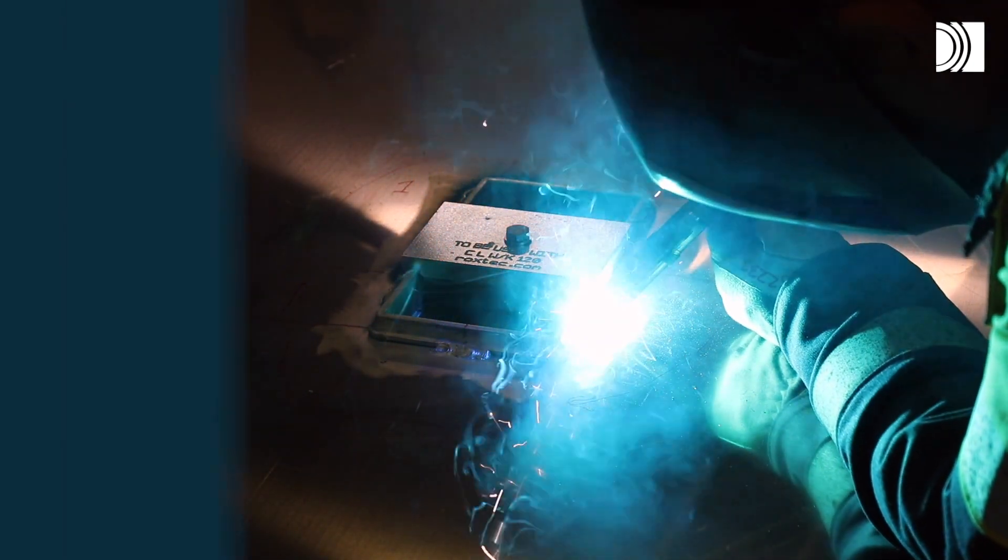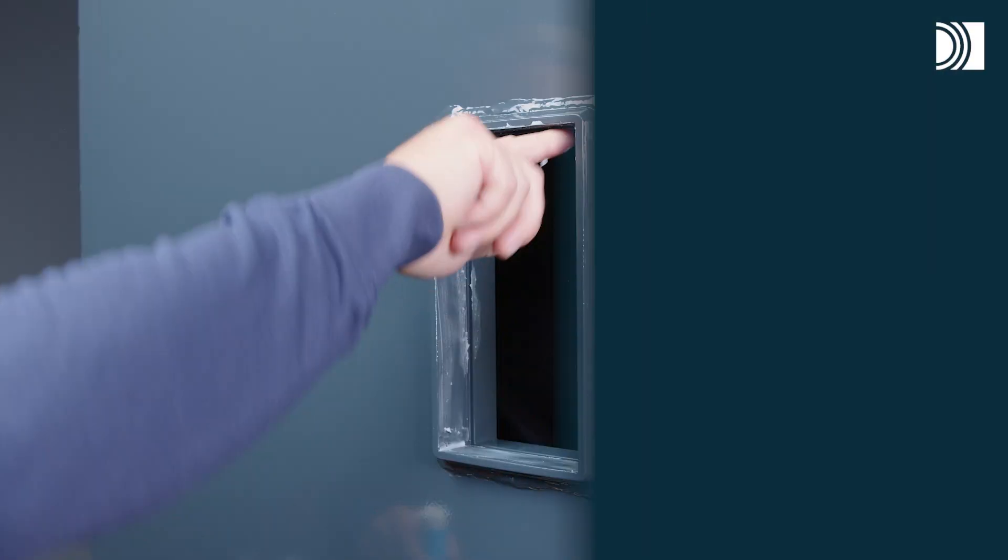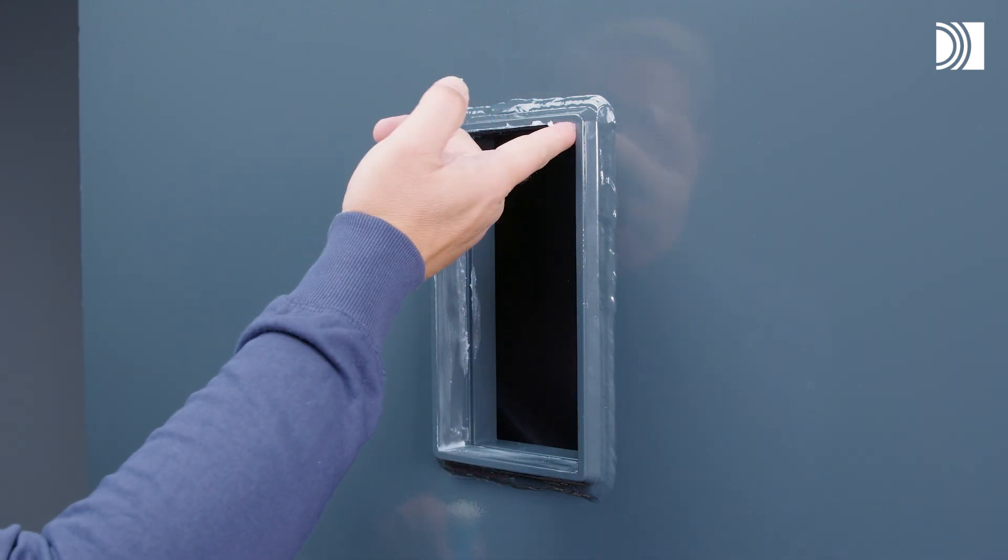Wait until the temperature of the frame is below 50 degrees Celsius before removing the welding fixture. Lubricate the inside sealing surfaces of the frame with Roxtec Lubricant, especially into the corners.